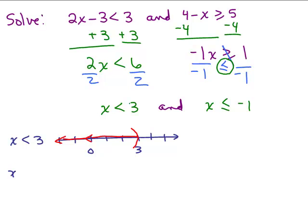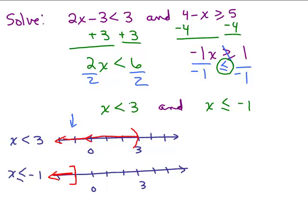Let's graph X less than or equal to negative 1. Line up the numbers the same way — here's 0 and 3, and less than or equal to negative 1 would be here. The overlap is at negative 1 and then to the left. So the solution is X is less than or equal to negative 1. In interval notation, it goes from negative infinity with a parenthesis on the left, up to negative 1 and touches it — so negative infinity to negative 1 with a bracket.